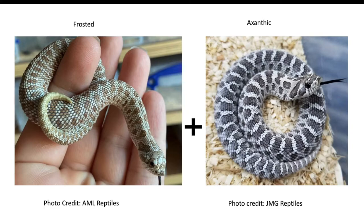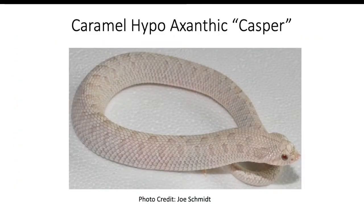Now going back to the frosted gene — caramel hypo — when we add the xanthic, this is another three-recessive visual animal. You get this snake called a Casper: caramel hypo xanthic.